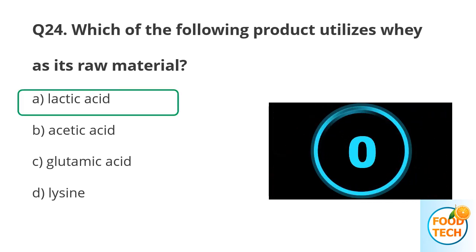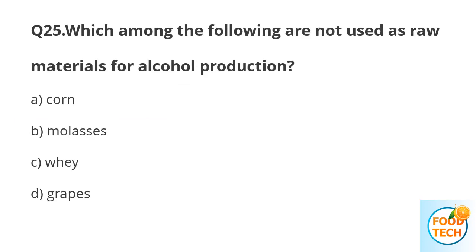Answer A. Lactic acid. Question 25. Which among the following are not used as a raw material for alcohol production? A. Corn. B. Molasses. C. Whey. D. Grapes.